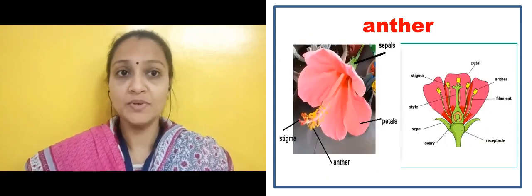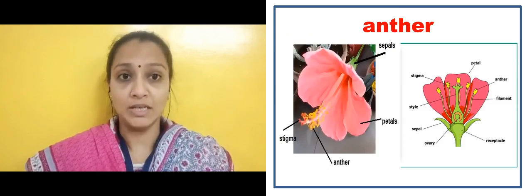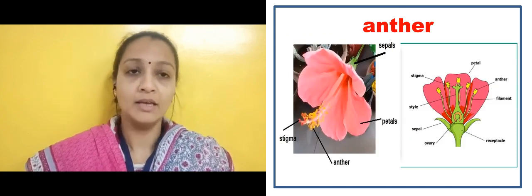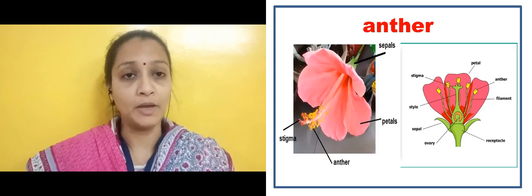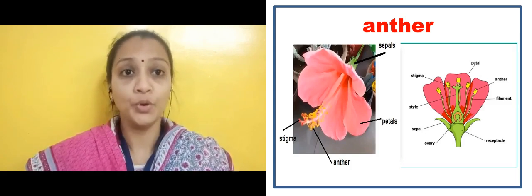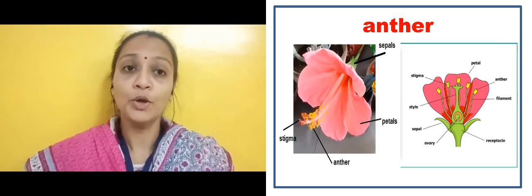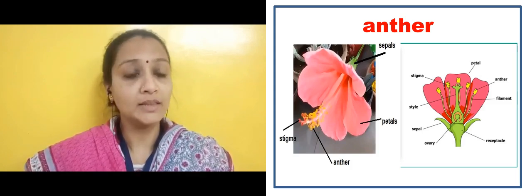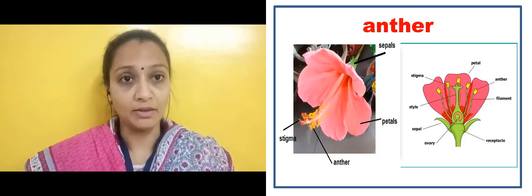Now students we will see what is known as Anther — A-N-T-H-E-R. Here you can see the flower. This flower has a small yellow part which I have arrowed. There are many of these. What you call Anther — so this is known as Anther.